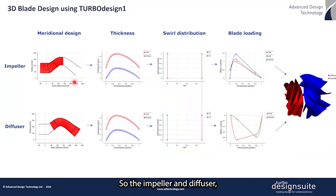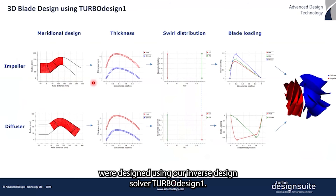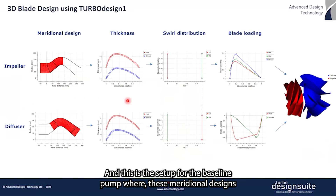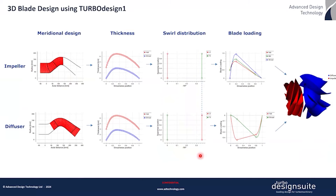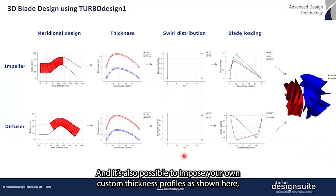The impeller and diffuser were designed using our inverse design solver TurboDesign1. This is the setup for the baseline pump, where the meridional designs and all the different settings come from the mean line code which we saw earlier. It's also possible to impose your own custom thickness profiles as shown here.